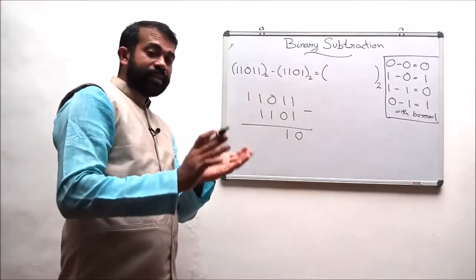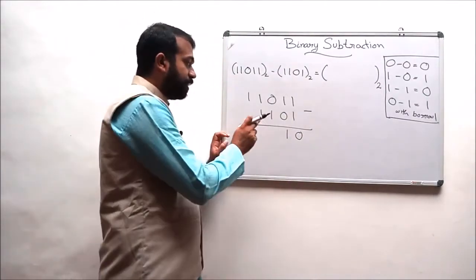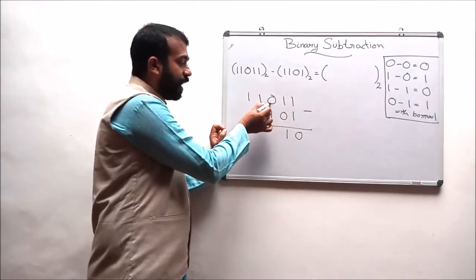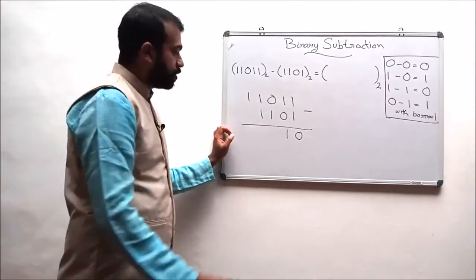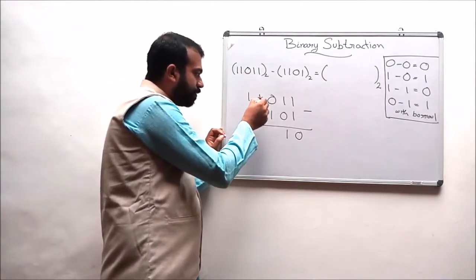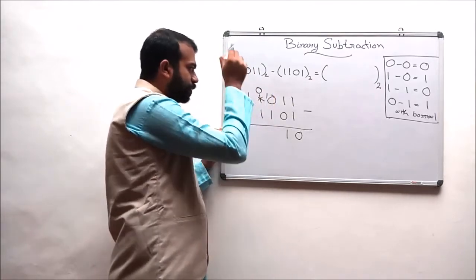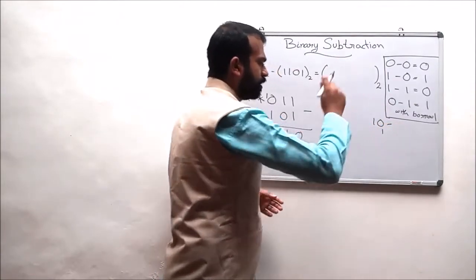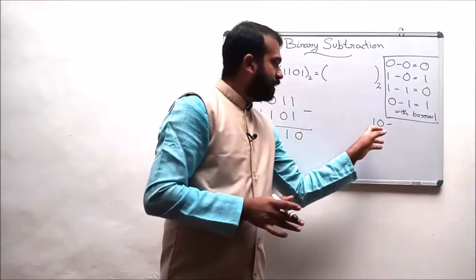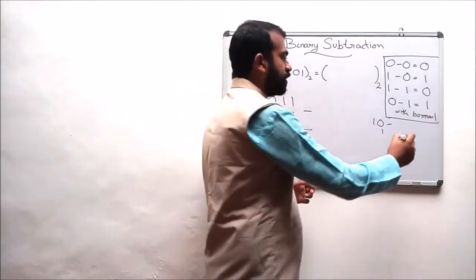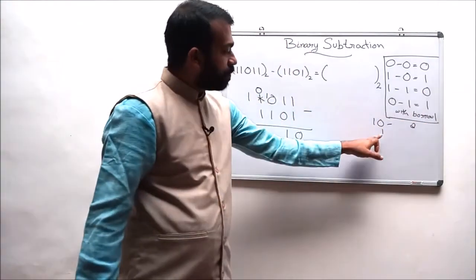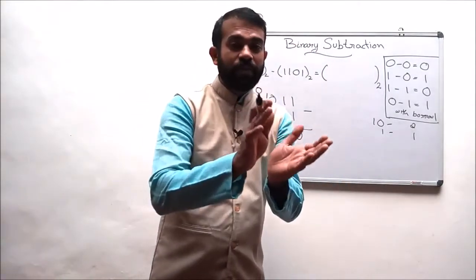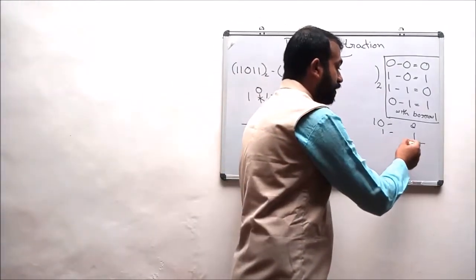Next, 0 minus 1: when subtracting 1 from 0, the rule says 0 minus 1 is 1 with a borrow of 1. So this 0 has to borrow a digit from the neighbouring position. When 1 is subtracted from that position, the result is 0 and a 1 is passed along. In decimal terms, borrowing makes that position 1-0, which equals 2, and 2 minus 1 results in 1.